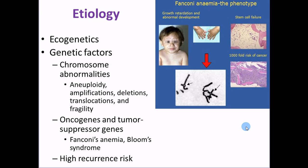Etiology can be ecogenetic — meaning both genetic and environmental. It can be oncogenes or tumor suppressor genes flipping off or on, chromosome abnormalities like aneuploidy, amplifications, and deletions. Fanconi's syndrome is a rare disease, about 1 in 350,000, more prominent in the Ashkenazi Jewish population. It results in congenital defects like short stature, skin issues, and shrunken features of the arms, head, kidney, and ears. The median survival age is about 30. Bloom syndrome is another one carried in Ashkenazi populations, with similar symptoms: short stature, narrow face, and a butterfly facial rash similar to lupus erythematosus.